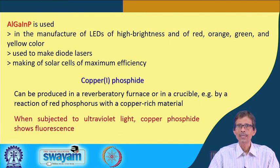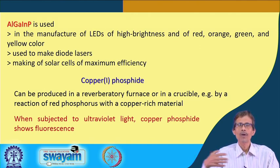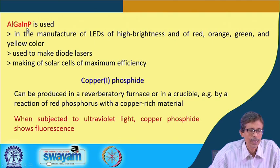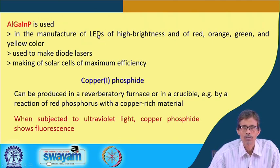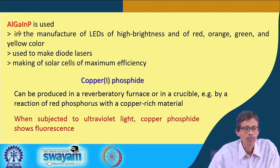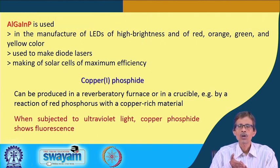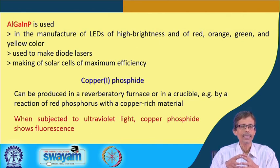Why make this complicated phosphide? Unlike aluminum phosphide, the simplest possible phosphide, its application for industrial purposes is limited. But for the electronic industry, the application of aluminum gallium indium phosphide is huge. This material is useful for the manufacture of light-emitting diodes — LEDs of high brightness. Not all LEDs are made from this material, but for high-brightness LEDs in the red, orange, green, and yellow color range, this material is used.